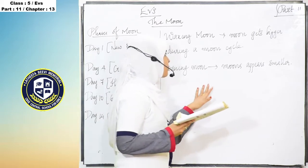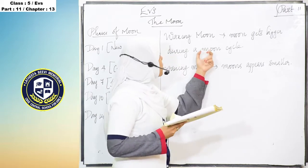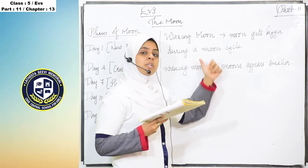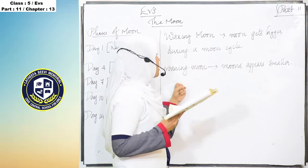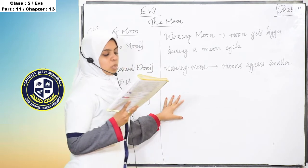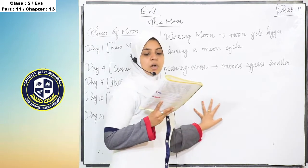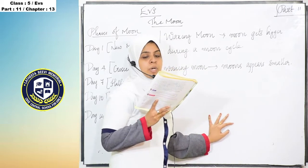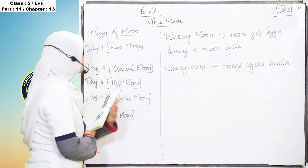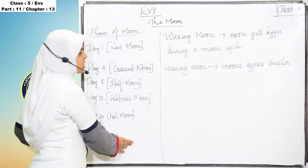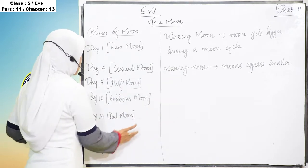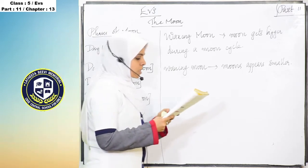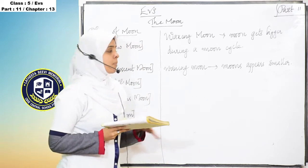Waning moon is the opposite of waxing moon — it is going back to its smaller size. When the moon appears to get smaller, it is called a waning moon. This phase occurs when the moon moves from a full moon to a new moon, and it also takes 14 days to complete.